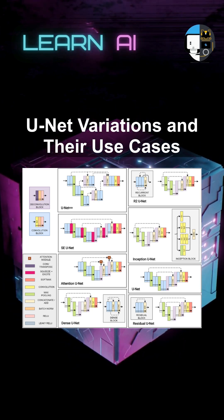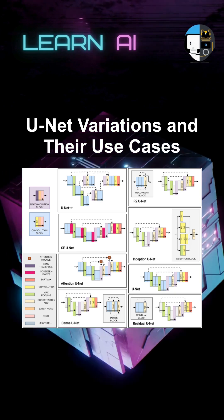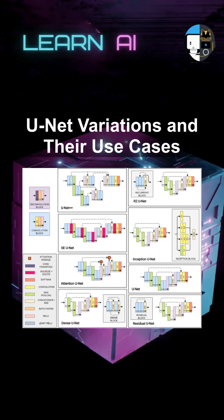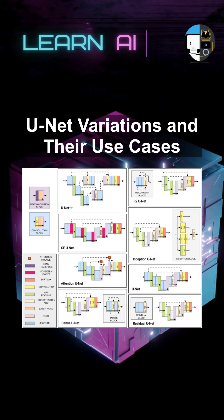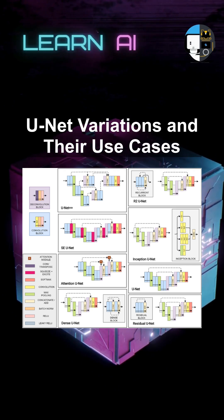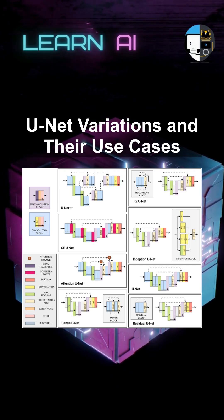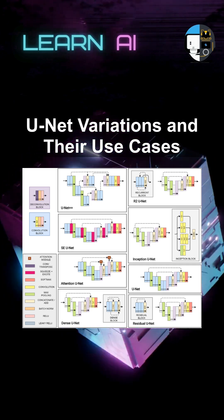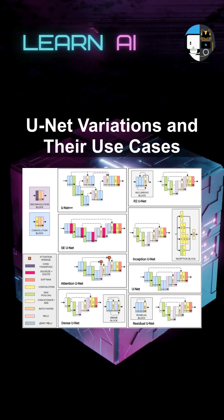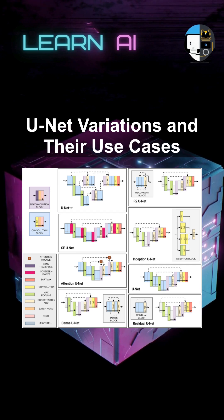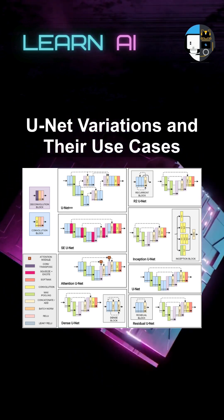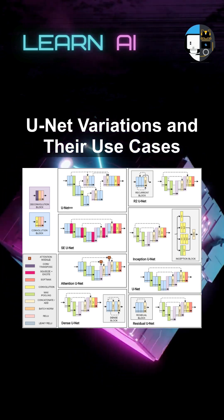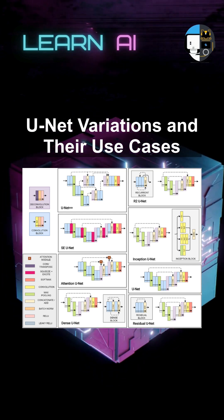Attention U-Net integrates attention mechanisms, allowing the model to focus on the most relevant features within an image, enhancing segmentation performance. V-Net is designed for volumetric segmentation, extending U-Net's capabilities to 3D data, which is particularly useful in medical imaging for analyzing volumetric scans.